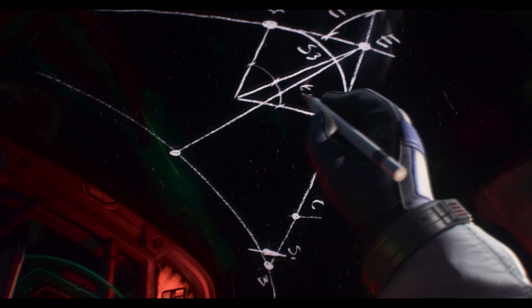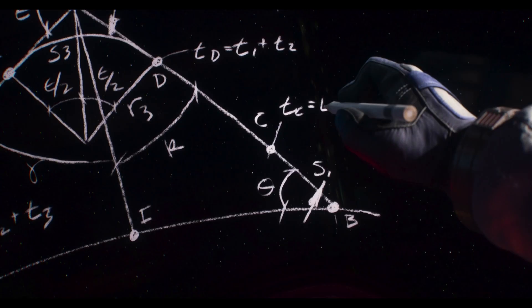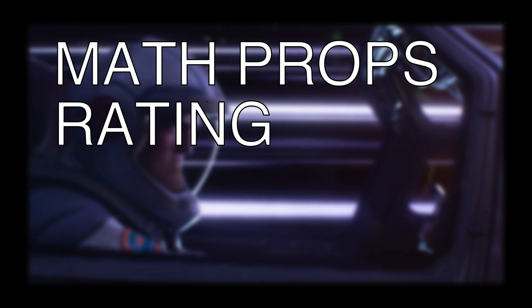Buzz also starts doing some geometry. This is all kind of nonsense here. The E-6B doesn't require any extra calculations on paper, certainly not drawing a bunch of diagrams like this. The diagram is cool looking, but it doesn't make a lot of sense.